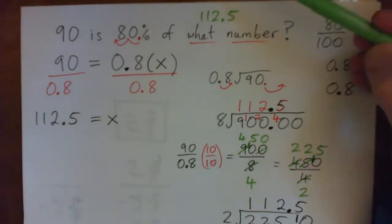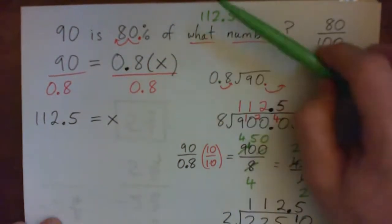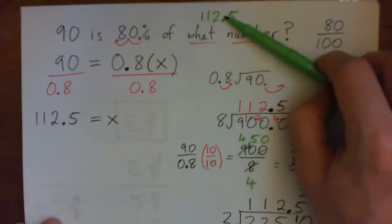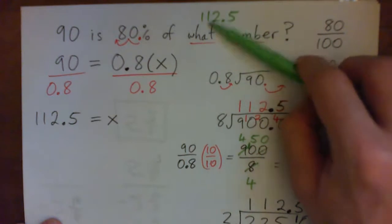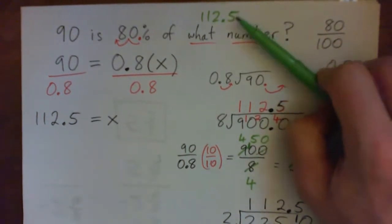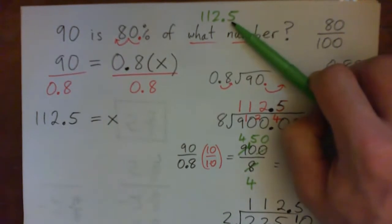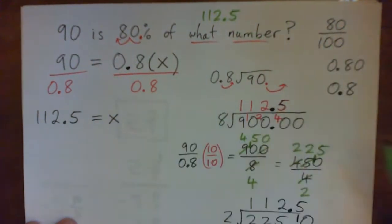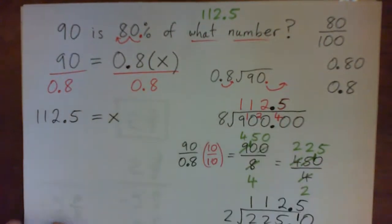So, 80% of 112.5 should give a number that is less than 112.5, shouldn't it? At least think of it that way. The answer should be less than 112.5. And it is. So, that does seem reasonable.